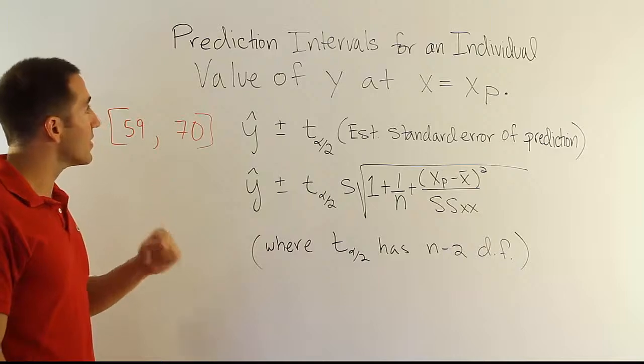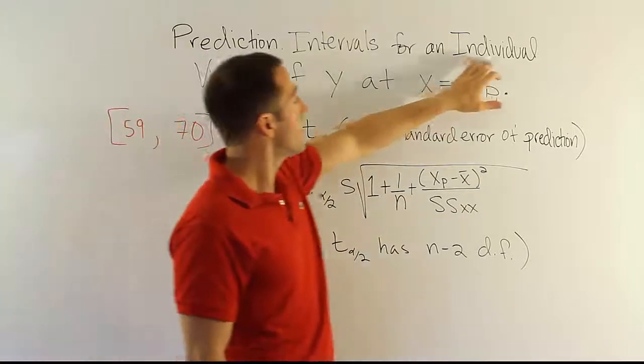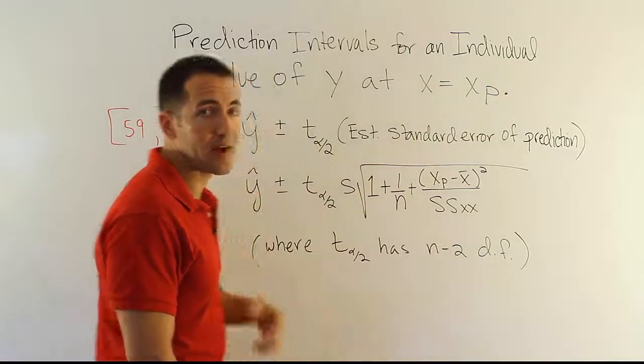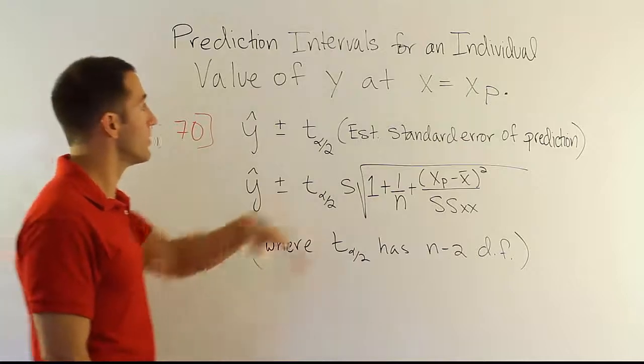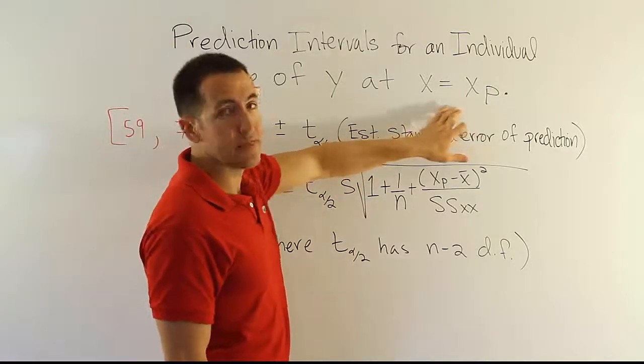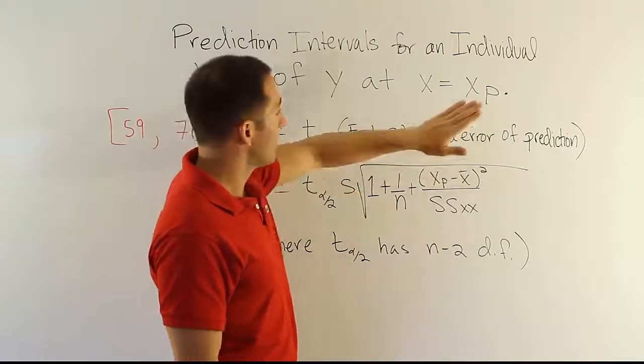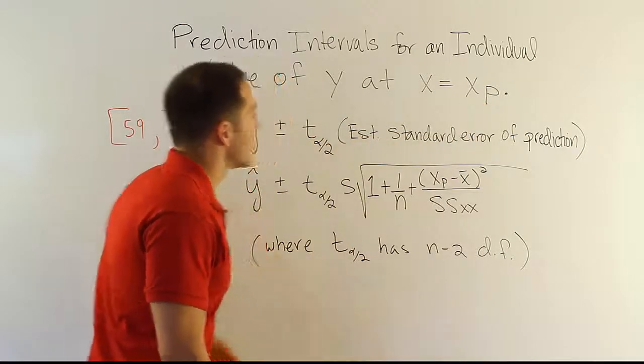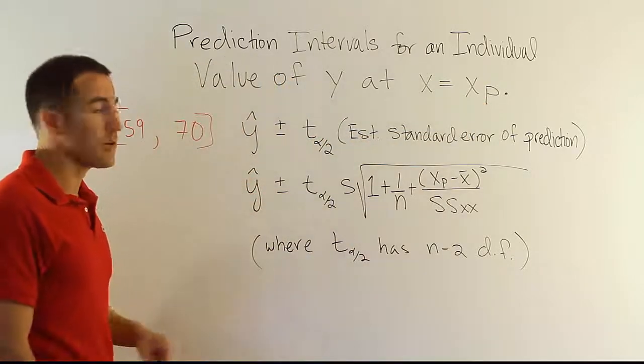The important thing is that it's an estimate for an individual value, not for an average value for people or things that have this trait. It's rather an individual who has that trait, and you're trying to make a prediction about their value of y.